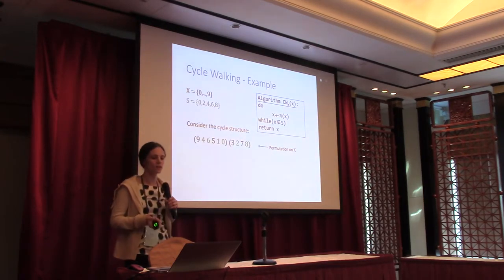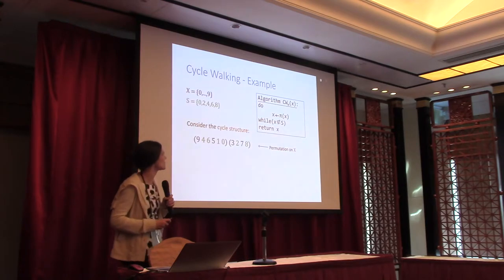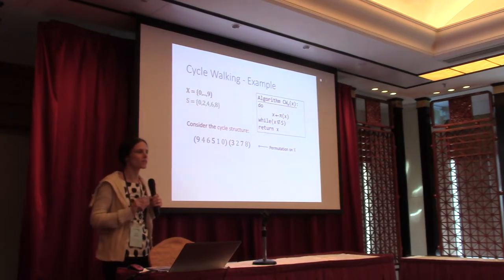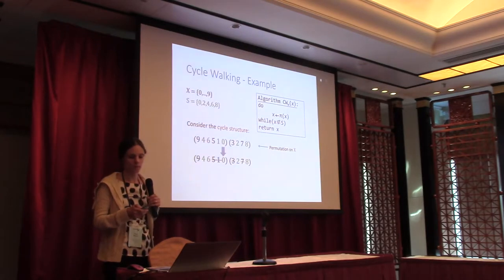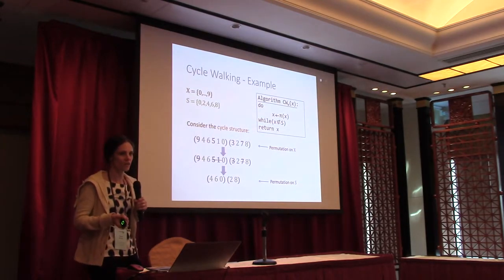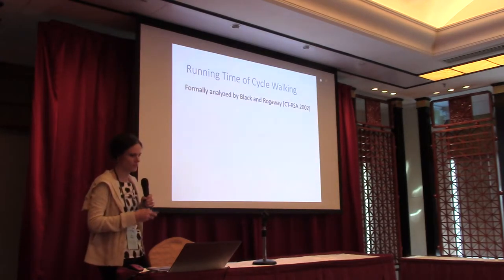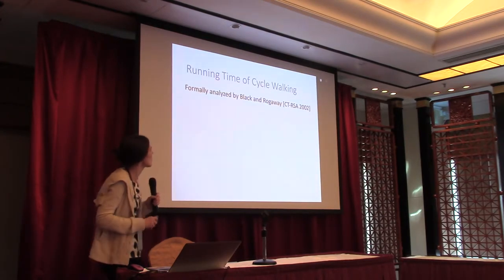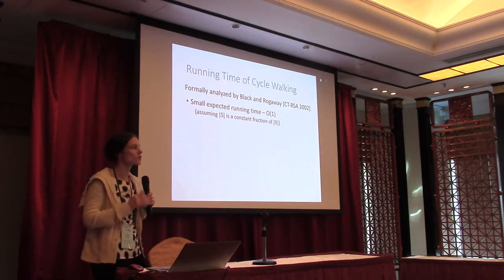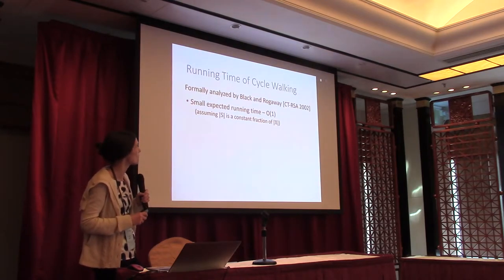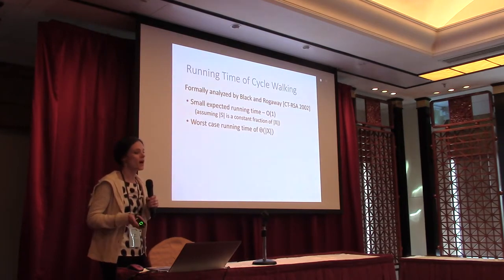From the cycle structure perspective, if we look at the cycles and the points in those cycles that are in our target set, essentially it erases all the other points and we're left with just a permutation on our smaller target set. Cycle walking was formally analyzed by Black and Rungeway in 2002. If we assume that the target set is a constant fraction of the size of the overall set, then we end up with a small expected running time.